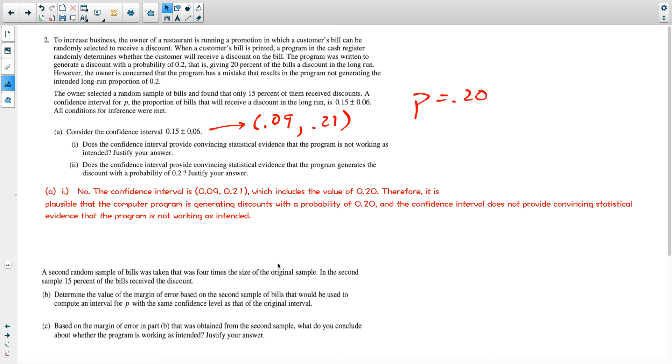Then they ask a follow-up question about this. Does the confidence interval provide evidence that the program generates a discount with a probability of 0.2? The first time I read this I thought they're asking the same question, but they're not. The first question is asking about whether you have evidence if it's broken. This one is, do you have evidence that it's exactly 0.2?